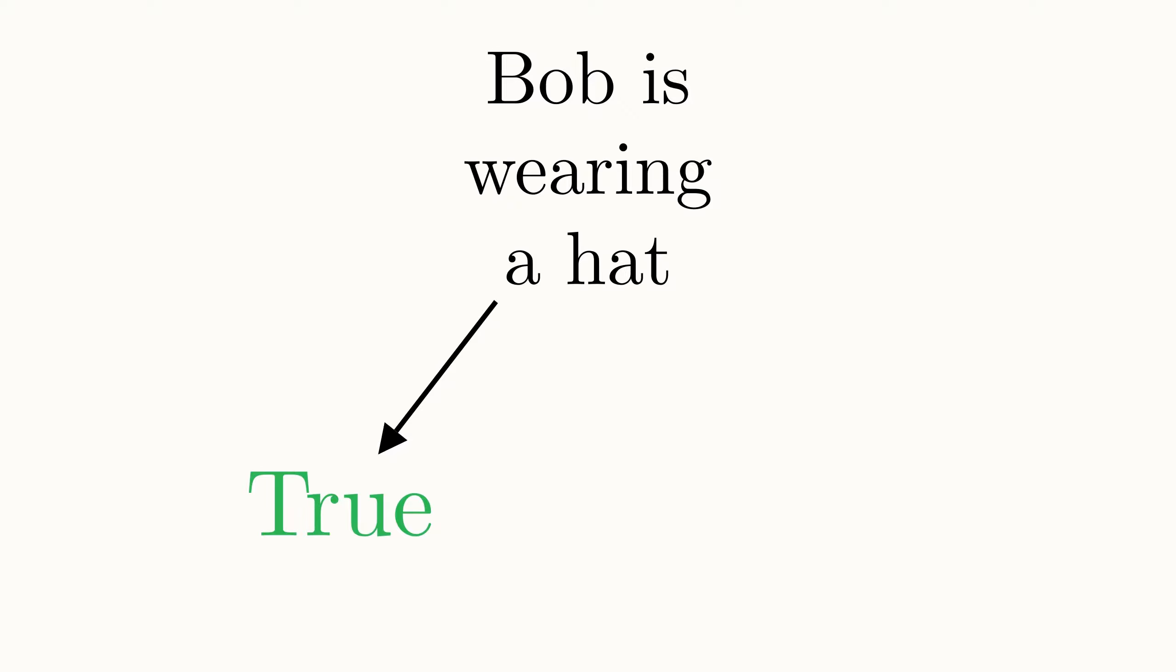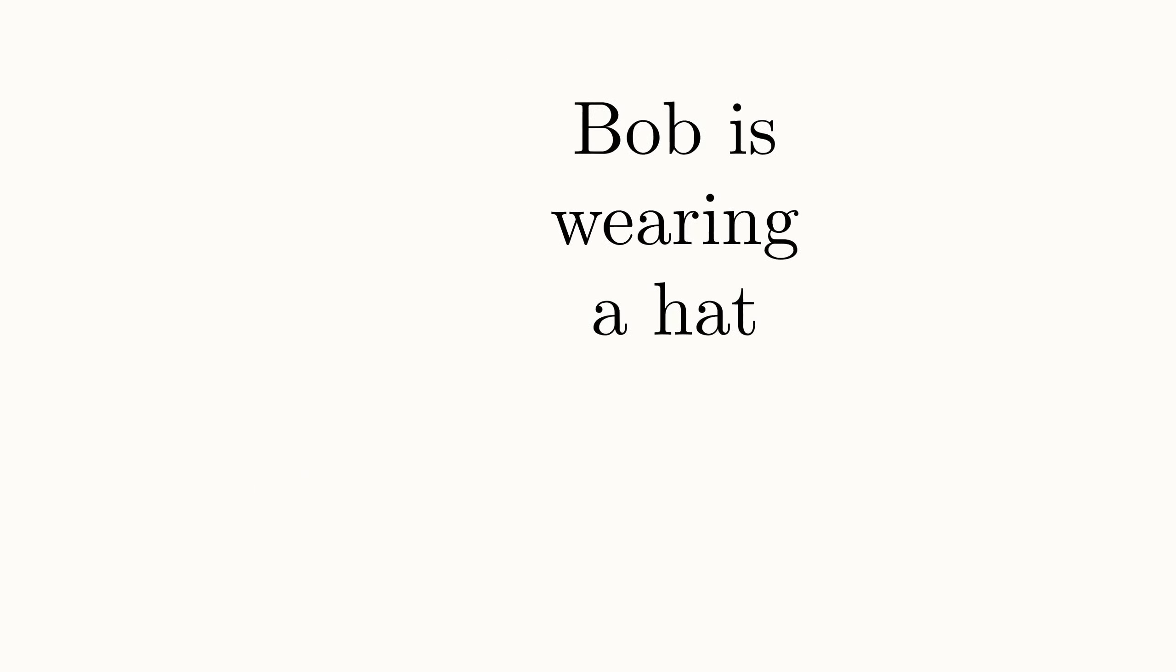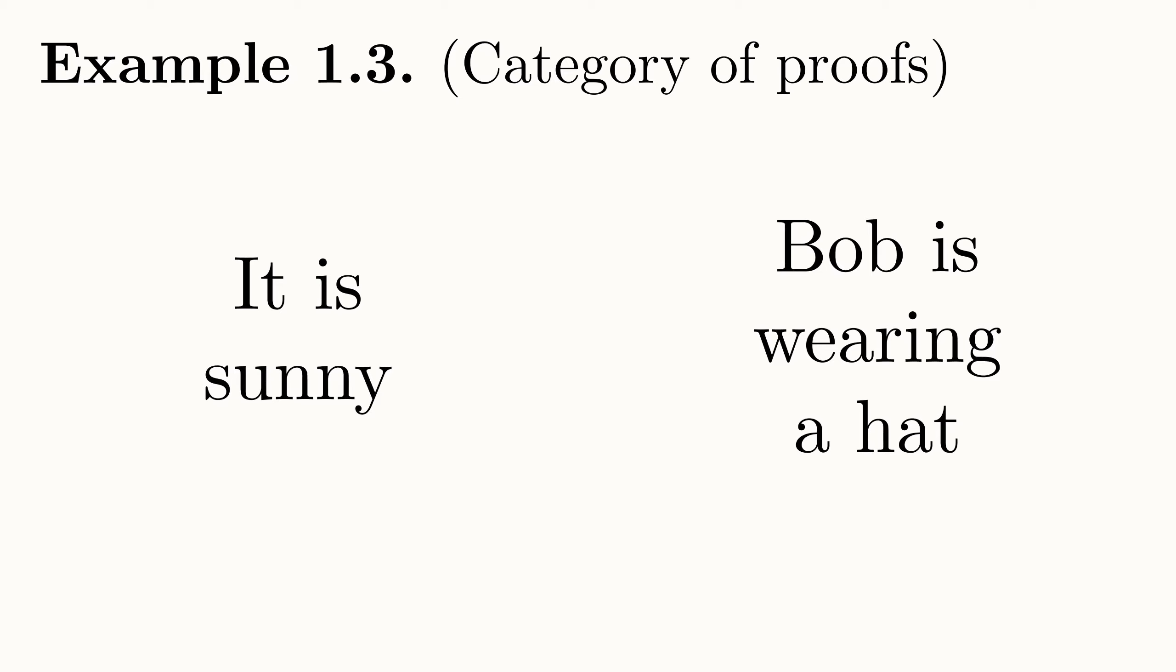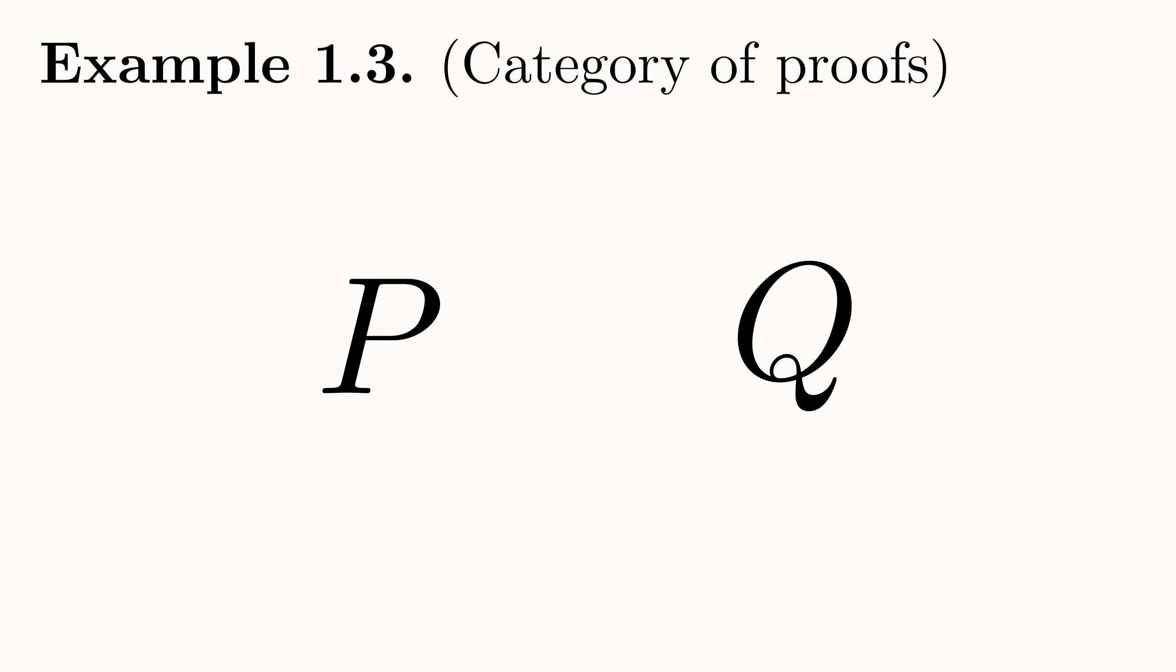We can also build new propositions from old ones. For example, the propositions it is sunny and Bob is wearing a hat can be combined to make the proposition if it is sunny, Bob wears a hat. We denote this with a special arrow between the two propositions called implication. In general, for any two propositions P and Q, we write the proposition if P is true then Q is also true as P implies Q. All possible propositions would be the objects in our category.